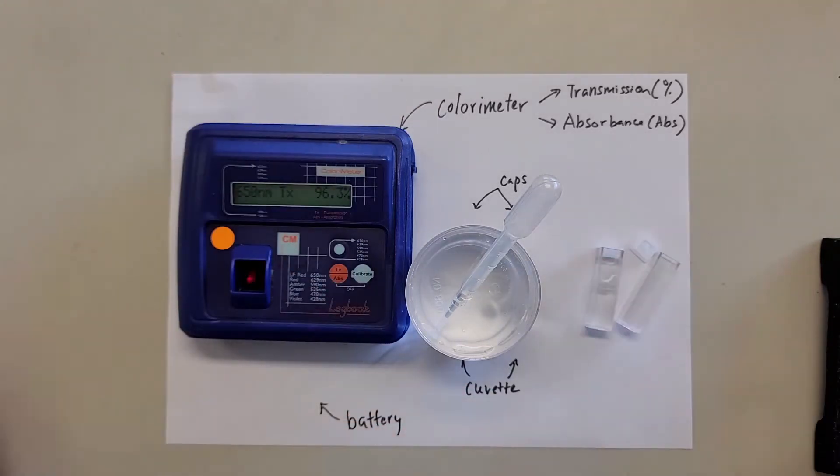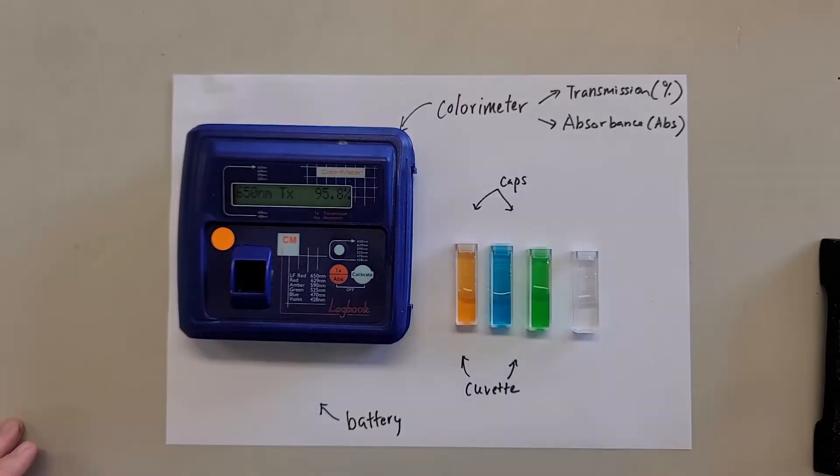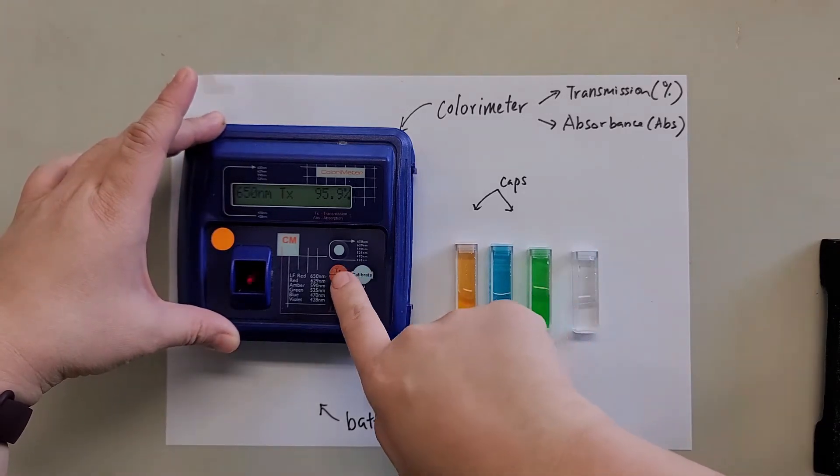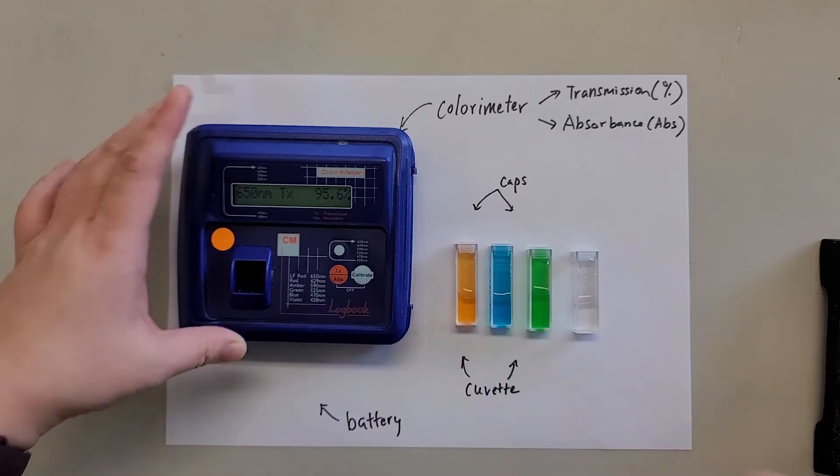Then the next part we need to teach you is how we decide which one we use for transmittance, which one we use for absorbance. So let's talk about absorbance first. I have prepared some colored solutions. Generally speaking, for colored solutions we will use absorbance. So first thing first, we need to change the function to absorbance first.